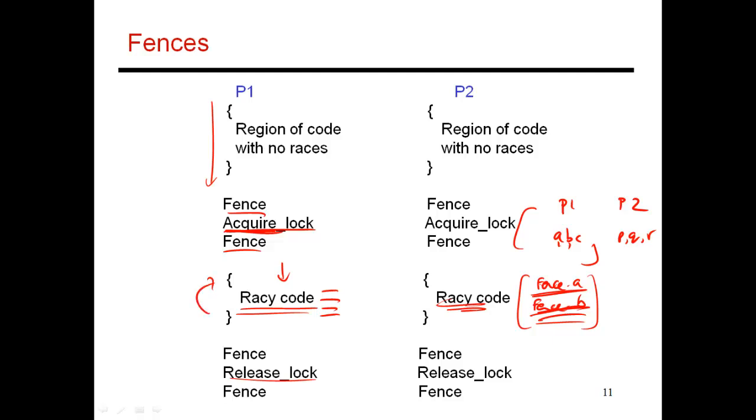So now once I get into the racy code, again I can do all kinds of reorderings over here. Because there's no one else touching these same variables. I'm guaranteed of that because I have the lock. And so now I can do out of order execution over here. I can do out of order execution over here. It's only when I cross the boundary from here to here that I have to make sure that everything before has finished. I've acquired the lock. Only then can I start executing these instructions. And now these instructions can be executed in out of order fashion.